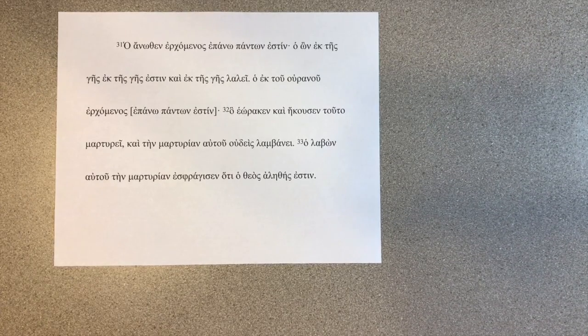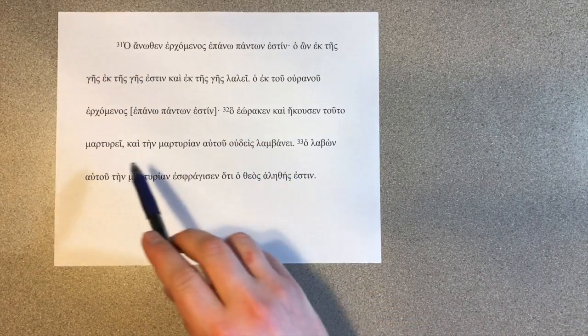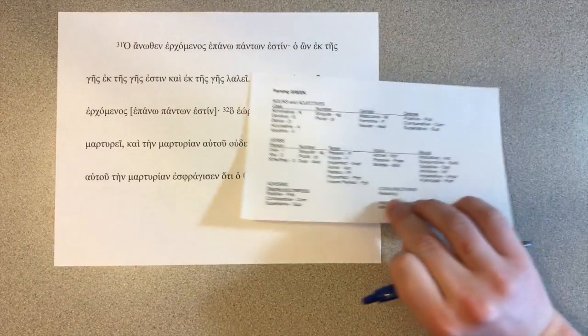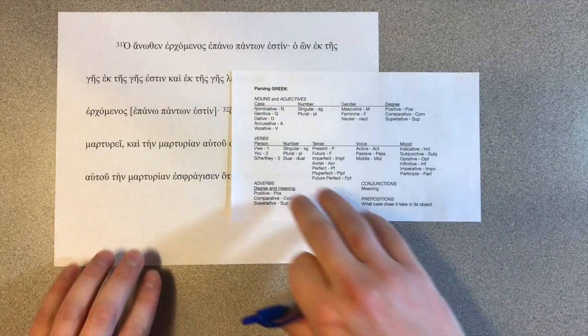Hi everyone, welcome. Today we are in John chapter 3. We're going to be taking a look at verse 31, stopping just about the middle before we start at verse 32. Here is our rubric, everything that we're looking for as we go through this text. Let's go ahead and get started.